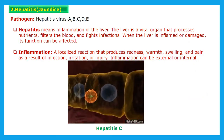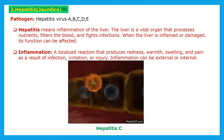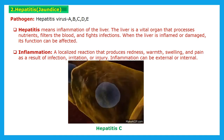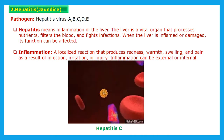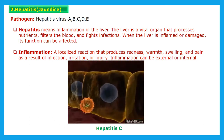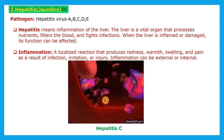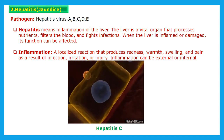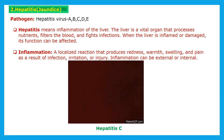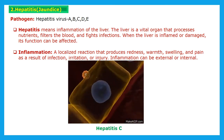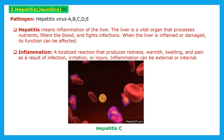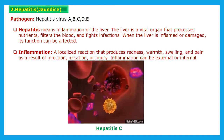The second disease is hepatitis or jaundice. This hepatitis disease is caused through pathogen — that is virus — Hepatitis A, B, C, D, and E. Hepatitis means inflammation of the liver. The liver is a vital organ that processes nutrients, filters the blood, and fights infection. When the liver is damaged by infection, its normal functions are affected.